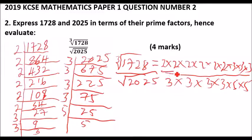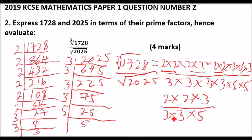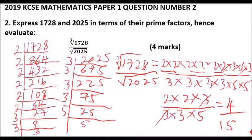To find the cube root, we group the 2s in threes — we get 2 × 2 = 4 — and group the 3s to get 3. For the square root denominator, we take 3 × 3 × 3 = 3 and one 5, giving 15. Simplifying gives our answer of 4 divided by 15. That is how you work out this question, worth 4 marks.